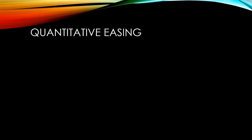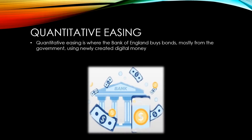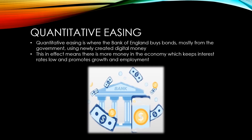Aside from affecting the base rate of interest, the Monetary Policy Committee can also use quantitative easing to affect the general level of interest. Quantitative easing is where the Bank of England buys bonds, mostly from the government, using newly created digital money. This in effect means there is more money in the economy, which helps to keep interest rates low and promotes growth and employment.